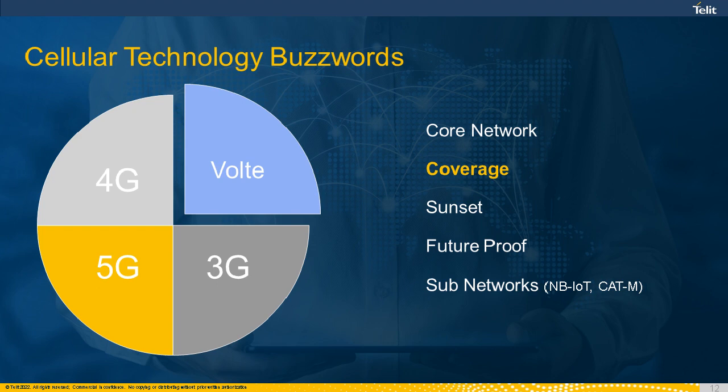When you use the word 'coverage,' it means where your connectivity provider can support and provide your service — from the first minute your IoT device is turned on and needs to send data. It's also important to have good prices in that location, and of course not to be limited by local operator or government restrictions. I will share our coverage solution in one of the next slides.